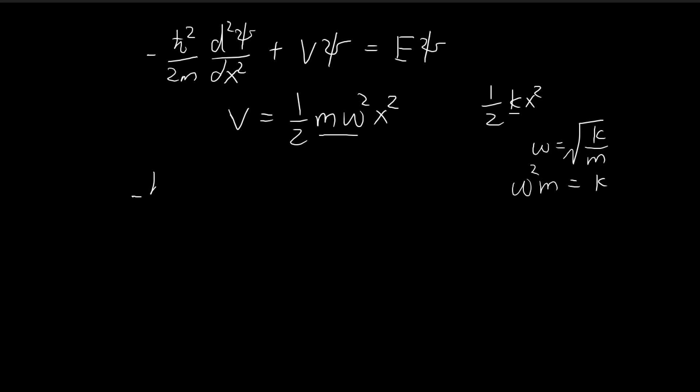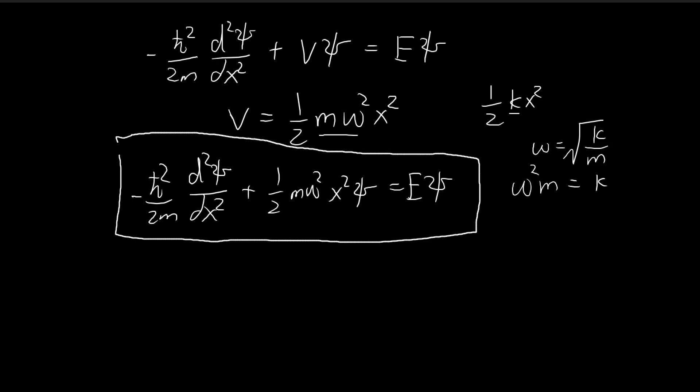So with this being said, we know that we can just apply this directly to our Schrödinger equation. And then as long as we can solve this differential equation, we would be able to find the energy states and the wave function for the quantum harmonic oscillator. And obviously that's easier said than done. This is pretty difficult to solve.